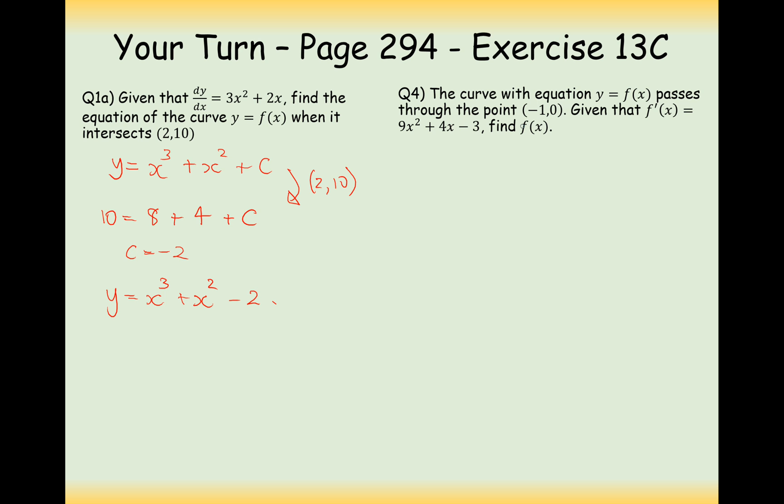Question 4 here. Given that a function passes through (-1, 0), given that this is our gradient function, find f(x). So f(x) here, the first part we need is to integrate. So this is going to be 3x cubed plus 2x squared minus 3x plus c. Now all that's left for us to do is to substitute in the value of minus 1 and 0. So 0 equals minus 3 plus 2 plus 3, for the double negatives that appear here, plus c. So that will cancel, that will cancel, so c is minus 2. So here our final answer is going to be f(x) equals 3x cubed plus 2x squared minus 3x minus 2.